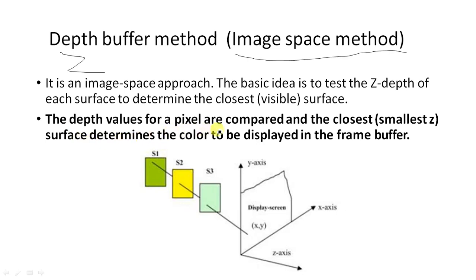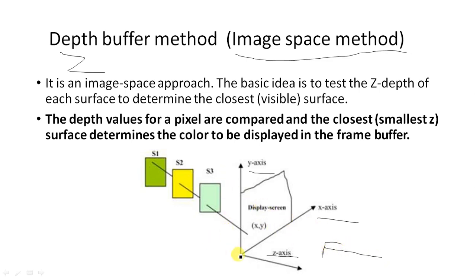The depth value for a pixel is compared, and the closest surface determines the color to be displayed in the frame buffer. If we have a three-coordinate axis system with positive X, positive Y, and positive Z axes, and we are looking in the direction of the negative Z axis, the nearest surface encountered first is S1, followed by S2 and S3.